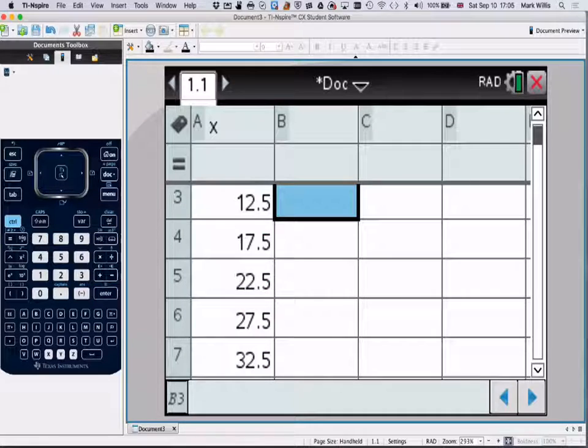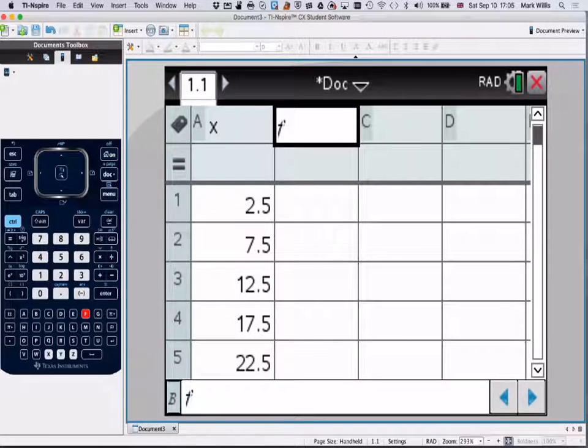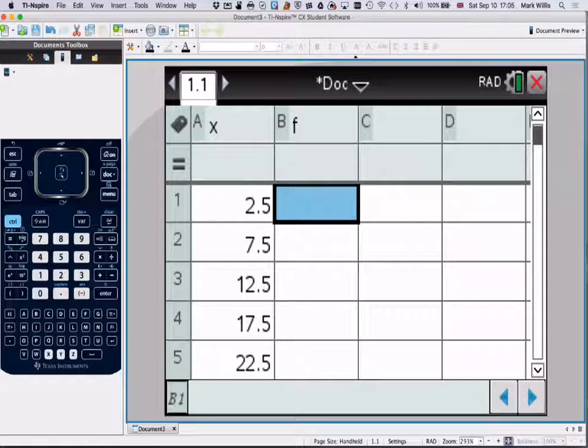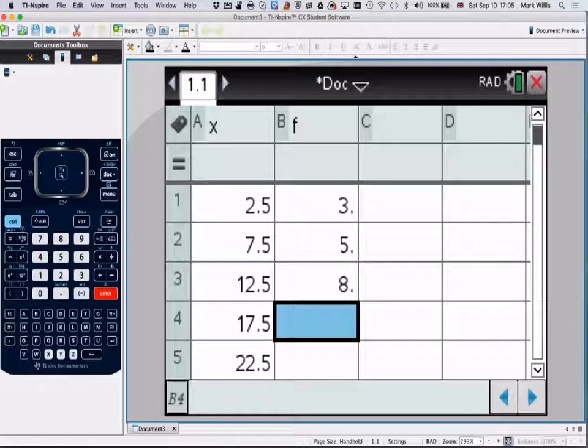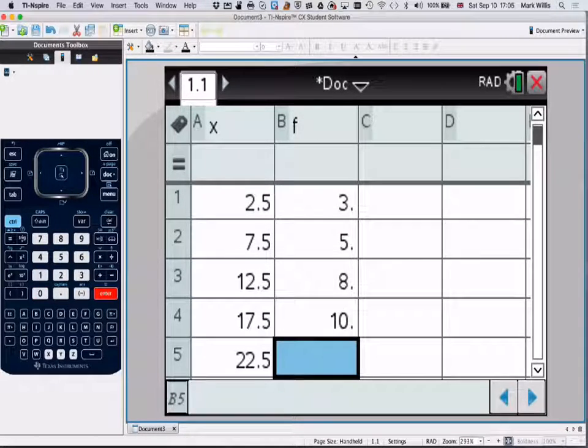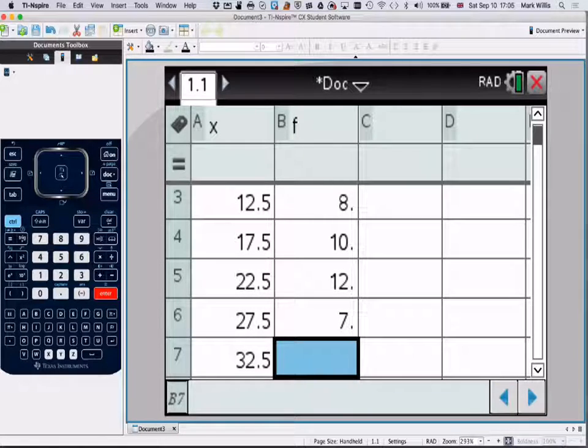From now, scroll back up to the top. And here we're going to put in F for frequency. And then we put in the frequencies carefully: 3, 5, 8, 10, 12, 7, and 5.